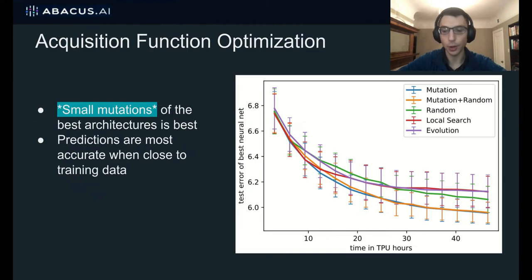So now we move to how we optimize this acquisition function. So for example, like how do we generate a set of candidate architectures or, more generally, how do we optimize the acquisition function? So we tried a few different things for this. We tried generating a set of candidate architectures randomly just by randomly sampling many architectures and evaluating the acquisition function for all of them. We also looked at mutating the best architectures from the set of architectures we've already trained so far. And we also tried a few other methods, for instance, local search and evolution. And it turned out that the mutation strategy performed by far the best. And not only that, but small mutations were also better than larger mutations.